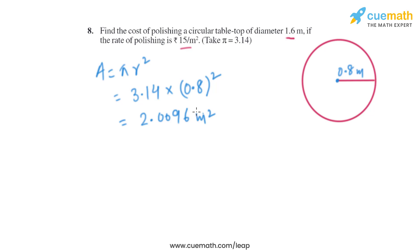That is the area of the circular tabletop. Now we need to find the cost of polishing. It is given in the question that the rate of polishing is ₹15 per square meter.